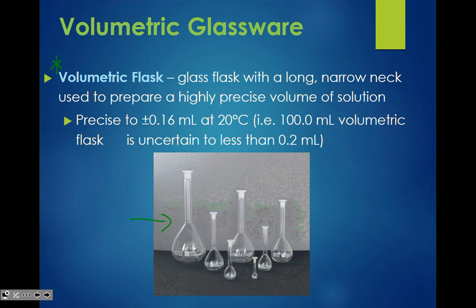Each volumetric flask has only one calibration line. For example, this would be a 100 milliliter flask and you can only use it to measure 100 milliliters. Maybe this one is a 10 milliliter volumetric flask, so it has just one line and is only used to measure exactly 10 mils. A volumetric flask only has one place where you can measure.